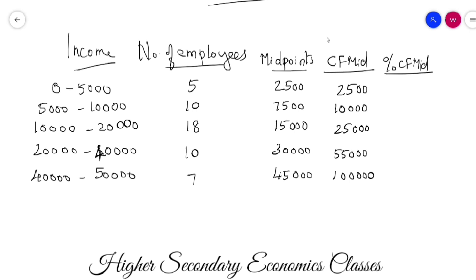The percentage values are: 2.5, then 10.0, then 25.0, then 55.0, then 100. Okay.